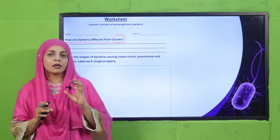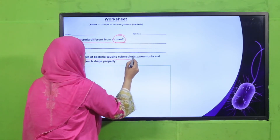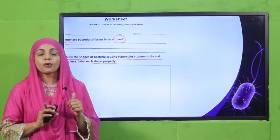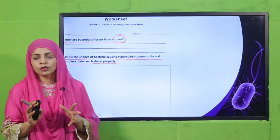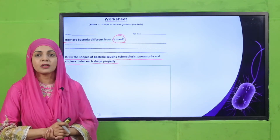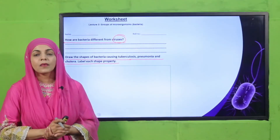Now what you need to do is draw the shapes of bacteria causing tuberculosis, pneumonia, and cholera, and label each shape properly. We have already looked at these three. Pause the video, complete the worksheet, color them — they will look very nice. Then submit it to your teacher and we will move forward.